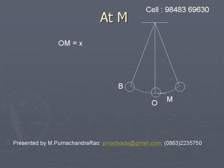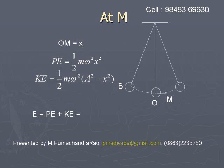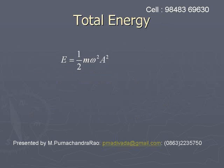Let us consider an arbitrary point M whose displacement from O is x. At this point, potential energy equals half m omega squared x squared and kinetic energy equals half m omega squared into a squared minus x squared. Hence, the total energy E equals PE plus KE, which equals half m omega squared x squared plus half m omega squared into a squared minus x squared, giving half m omega squared a squared. The total energy at any point is constant.